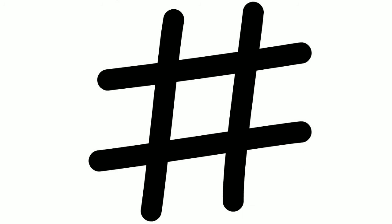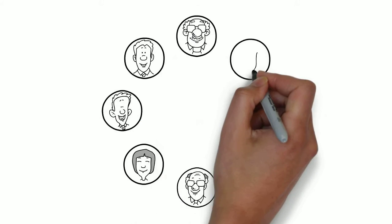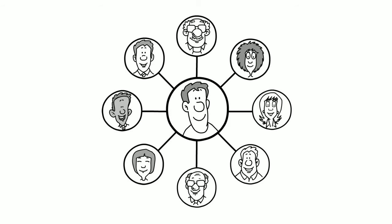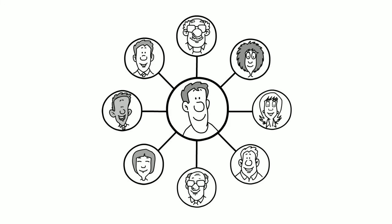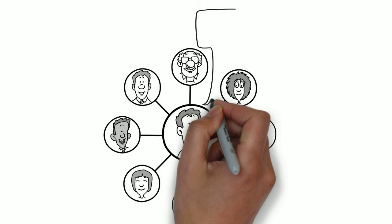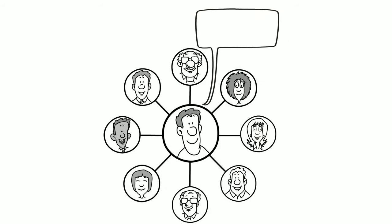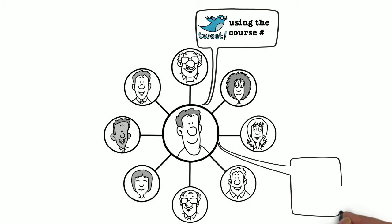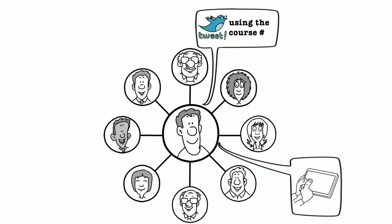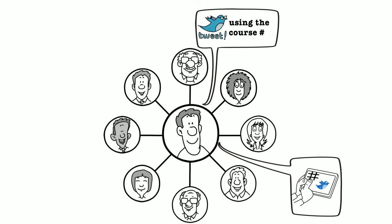What do these results mean? Even though a hashtag exists, it does not necessarily mean that this online space is an interactive learning environment. To become more effective, the hashtag needs more intentional use. For example, instructors might need greater awareness that the hashtag exists, or recommendations on how to use it appropriately. Perhaps assignments that make use of the hashtag need to be created.